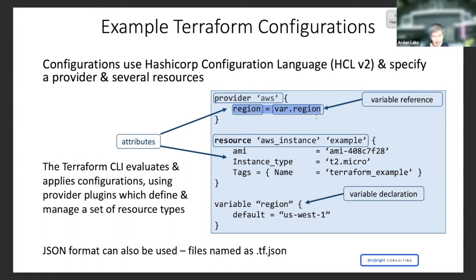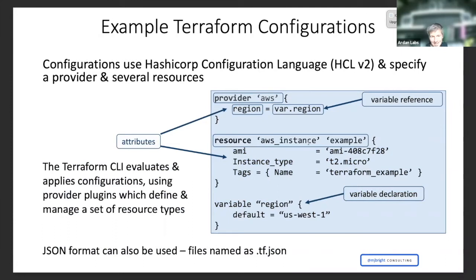Region is an attribute of the provider resource. Then we have a resource type AWS instance — so a virtual machine, an EC2 virtual machine. 'Example' is just the Terraform name we're giving to it. And then we have a set of attributes, probably about the minimum set: the Amazon machine image we're going to use and the instance type we want to create.